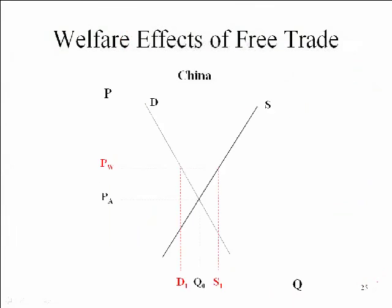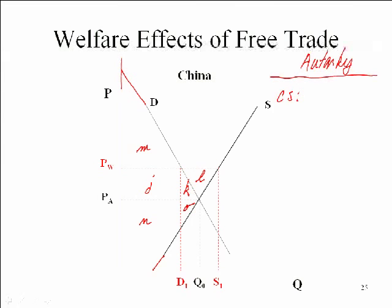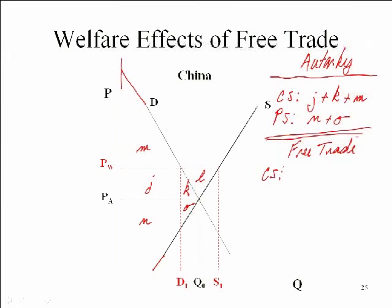Let's do the same thing for China, using areas J, K, L, M, N, O. The autarky consumer surplus is J, K, and M — under the demand curve above the price. Producer surplus is N and O — under the price above the supply curve. With free trade, consumer surplus is now just M. Producer surplus, which was N and O before, now expands to include J, K, and L.